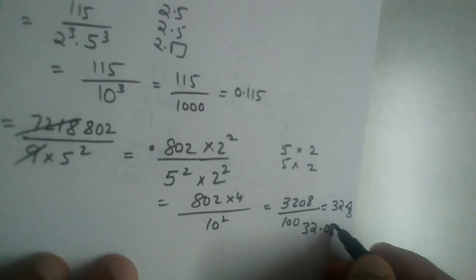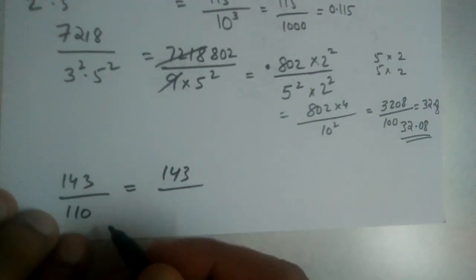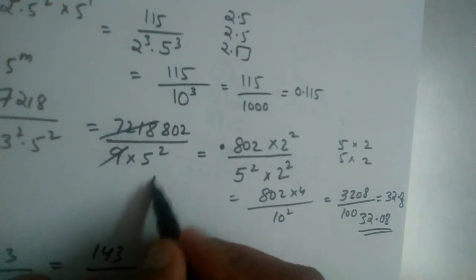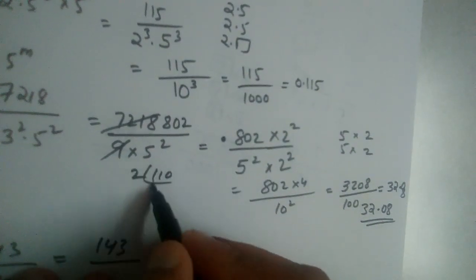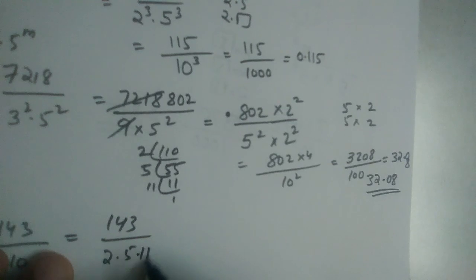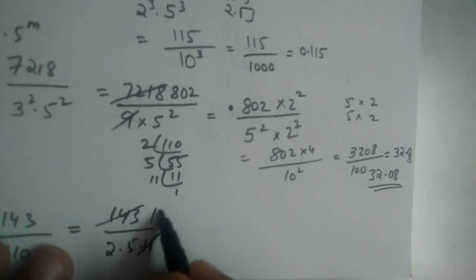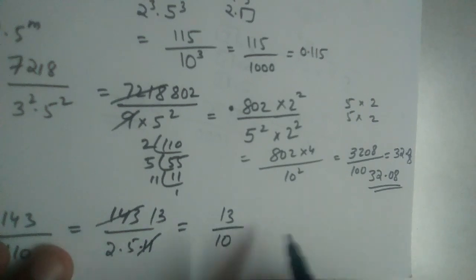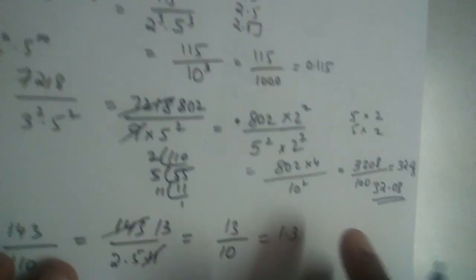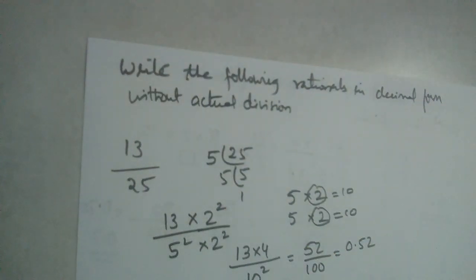For 143/110: prime factors of 110 are 2 × 5 × 11. The 11 cancels with 143 (since 143 = 11 × 13), leaving 13/10 = 1.3. So in such problems, we should make the denominators powers of 10.